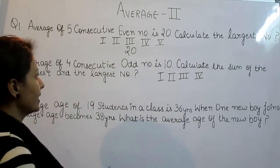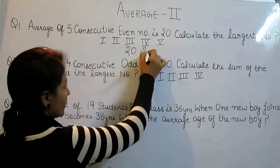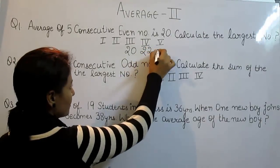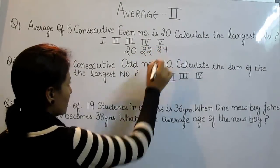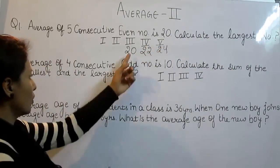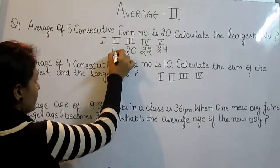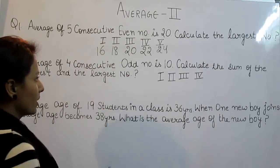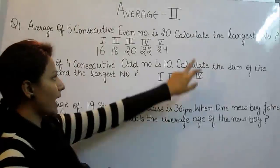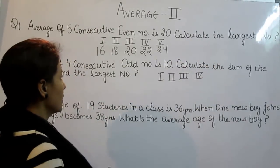After 20, our next even number is 22 and after that is 24. And before 20, the even number is 18 and before 18 is 16. But we have to calculate the largest number.